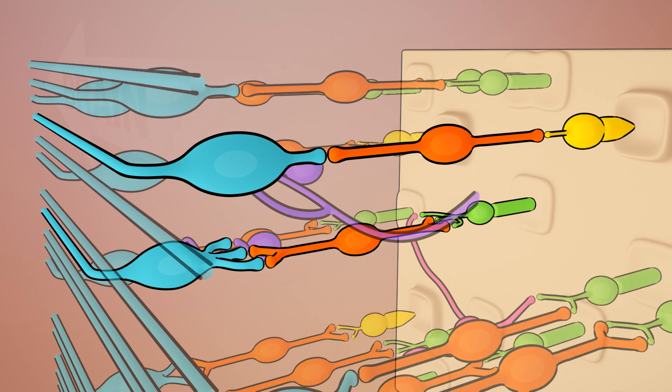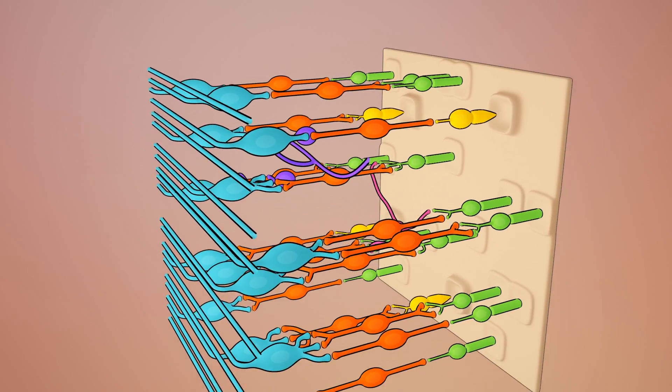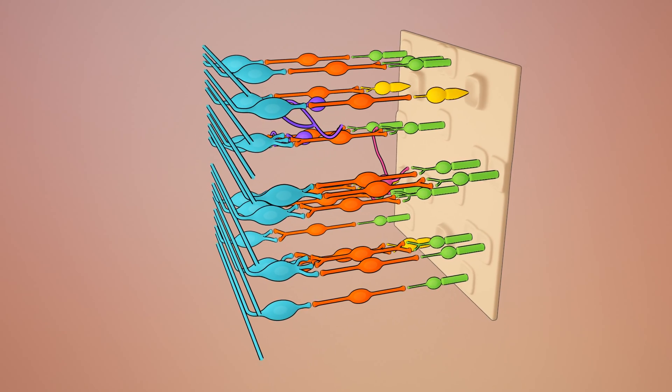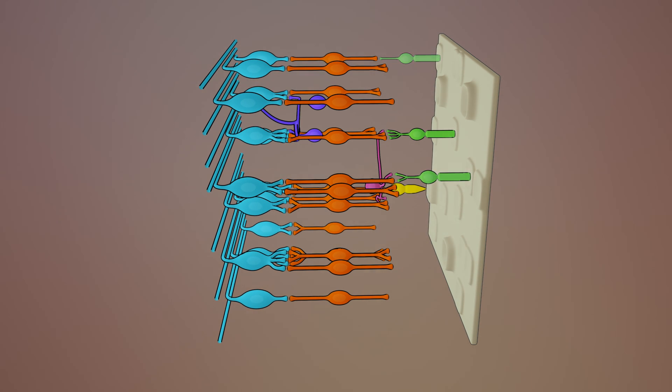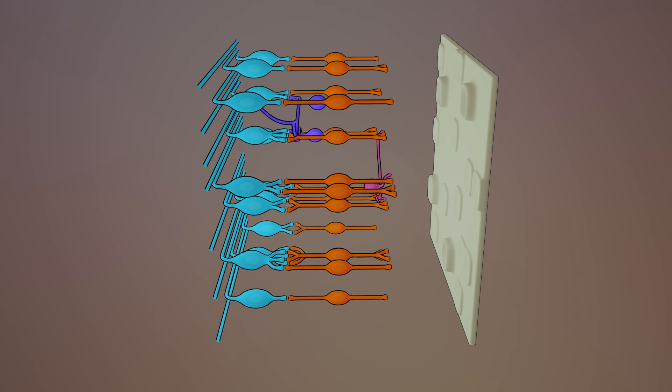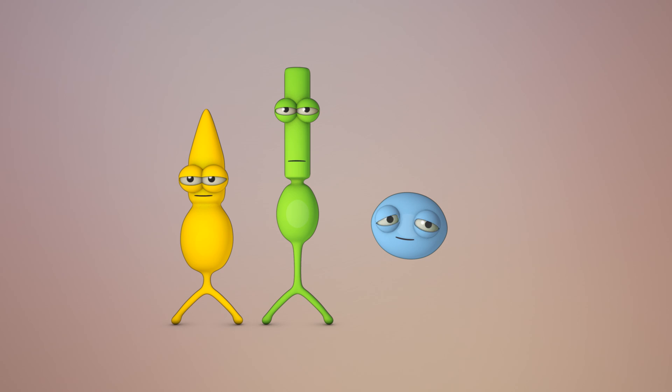People who have Usher's syndrome and retinitis pigmentosa experience a steady loss of these photoreceptors, until finally, that screen in the eye can no longer detect light nor broadcast signals to the brain.